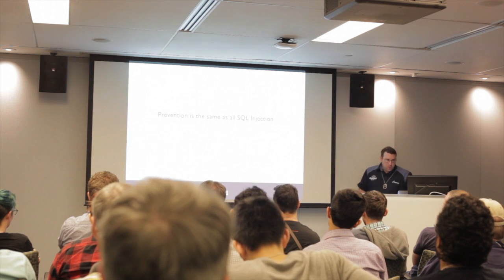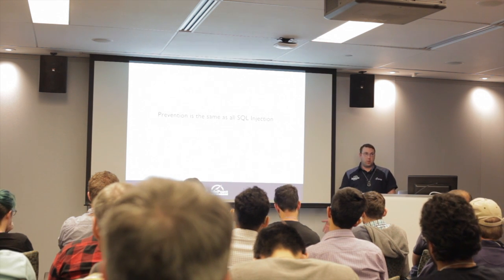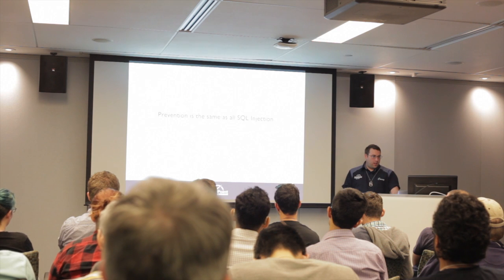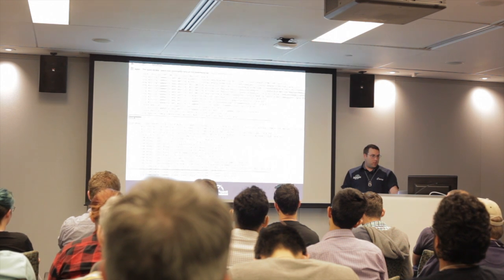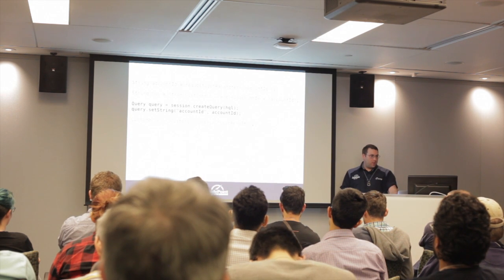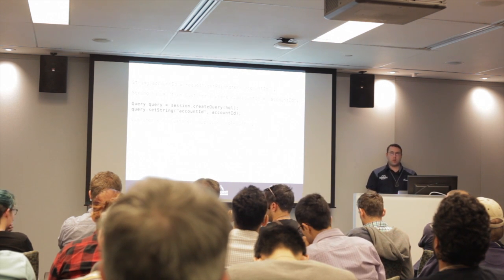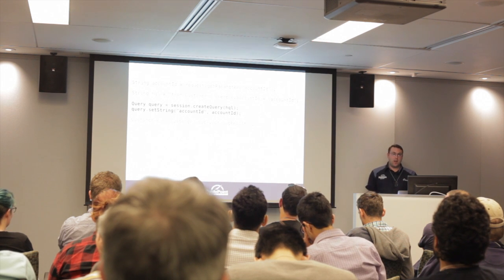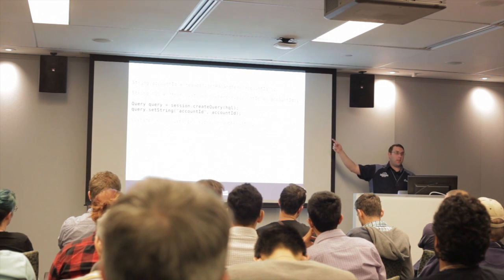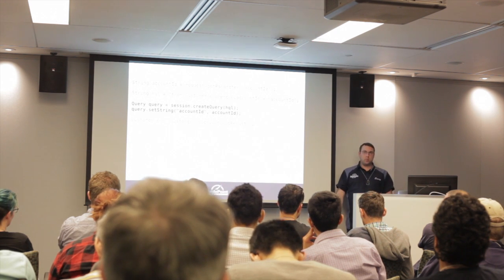Prevention is the same as for regular SQL injection: don't use string concatenation in HQL queries. That's it. Looking back at the initial example query — just like named parameters in JDBC, we have named parameters in HQL queries as well, and you can set the account ID through those. Beyond security, using named parameters in Hibernate actually provides automatic query caching, which straight JDBC wouldn't do. So most developers should be doing this anyway for performance reasons.